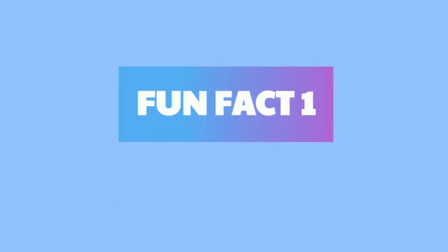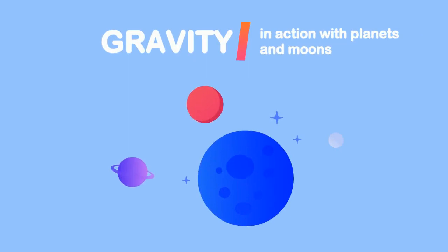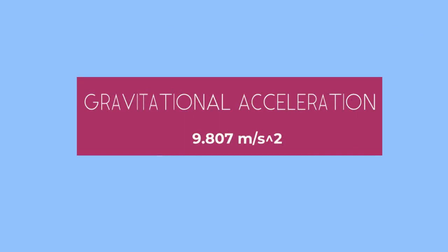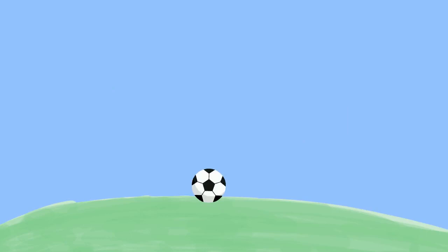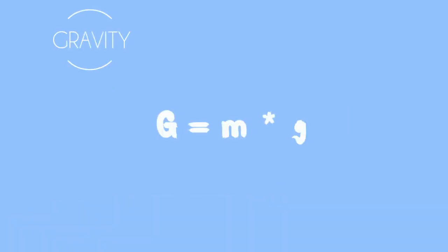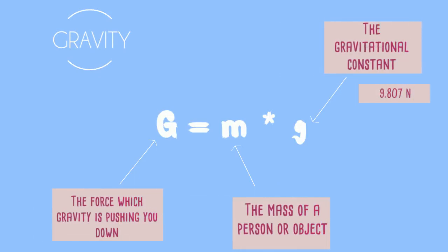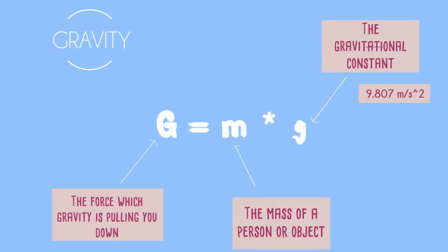Fun Fact 1. Gravity is a force that attracts stuff to more massive objects. The gravitational acceleration on Earth is 9.807 meters per square second — that means if you fall to Earth, that is the acceleration during your fall. There is an equation: big G equals small g times m. Big G is the weight, m is the mass — there is a significant difference. Big G is the force of gravity pulling you to Earth, while m is your mass in pounds or kilograms, and small g is the gravitational constant, or 9.807 meters per square second.